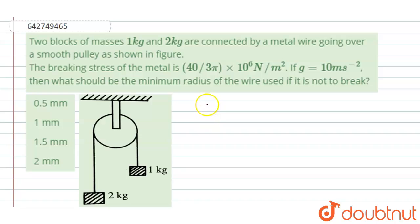Write the tension of the wire equals 2 times 2 times 1 - these are the masses - by 2 plus 1 times g. So now substitute it: 2 times 2 times 1 by 2 plus 1 times 10.